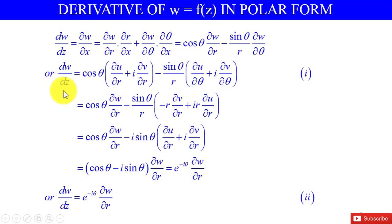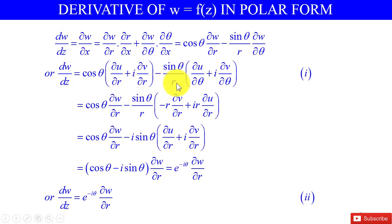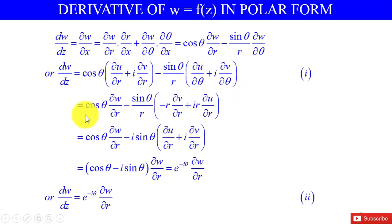So dw/dz = cosθ · (∂u/∂r + i ∂v/∂r) - (sinθ/r) · (∂u/∂θ + i ∂v/∂θ), since w = u + iv. This gives: cosθ · ∂w/∂r - (sinθ/r) · ∂w/∂θ.